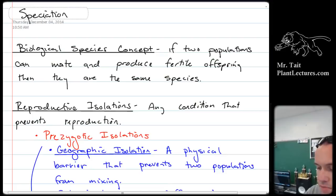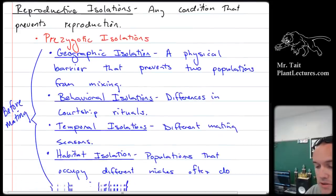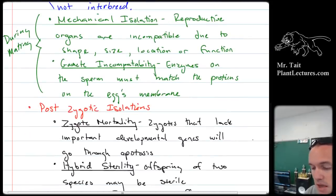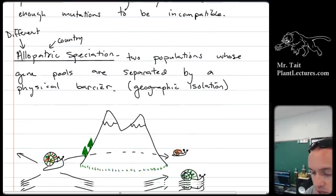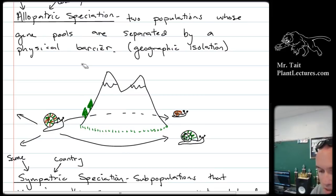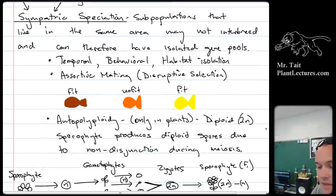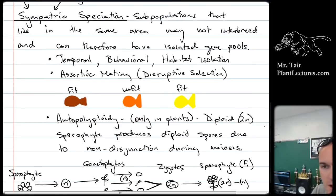Speciation — the biological species concept says that in order for two organisms to be members of the same species, they have to be able to reproduce. There are all kinds of reasons why they wouldn't — incompatibilities and isolations — leading to two types of speciation. The first is allopatric speciation, where there's a physical barrier between them called geographic isolation. The second is sympatric speciation, where they're right next to each other but still don't reproduce together, caused by some other type of isolation.